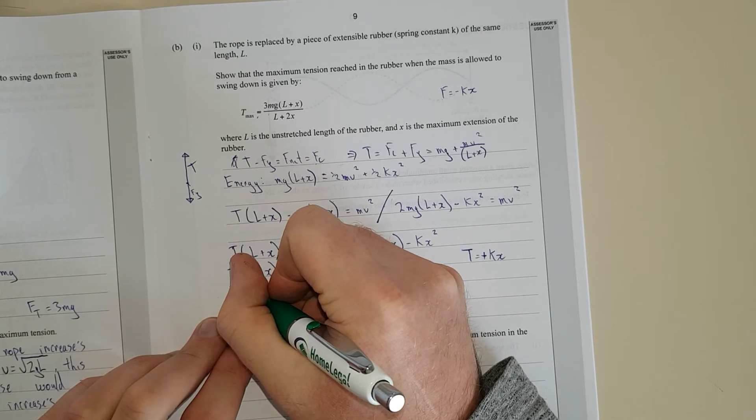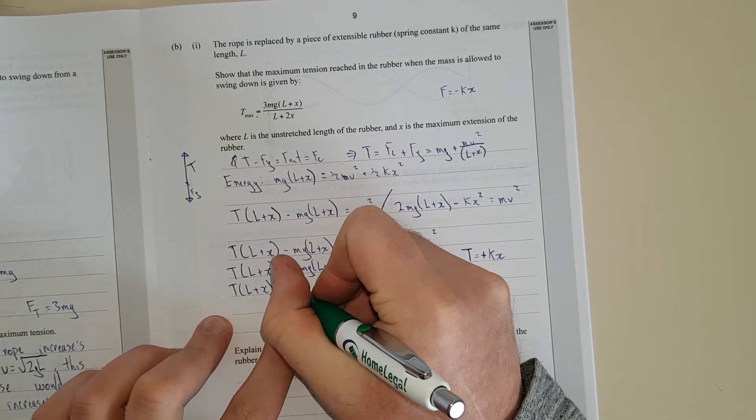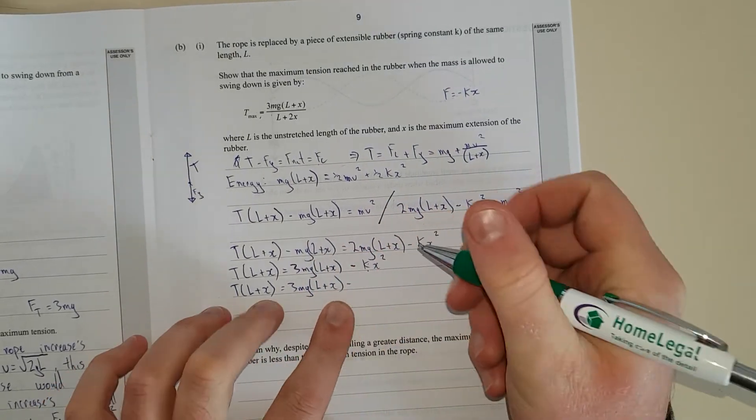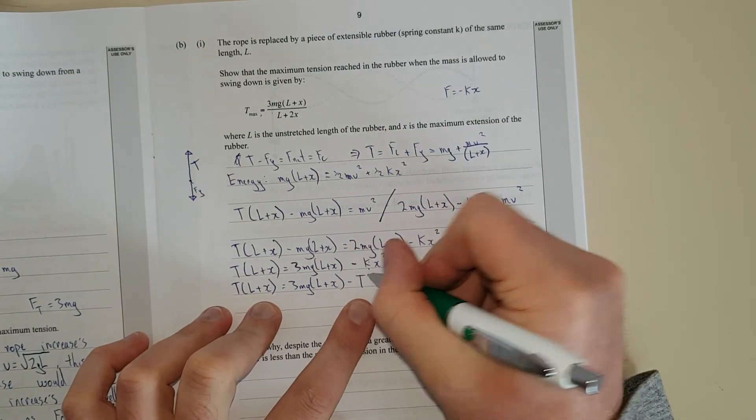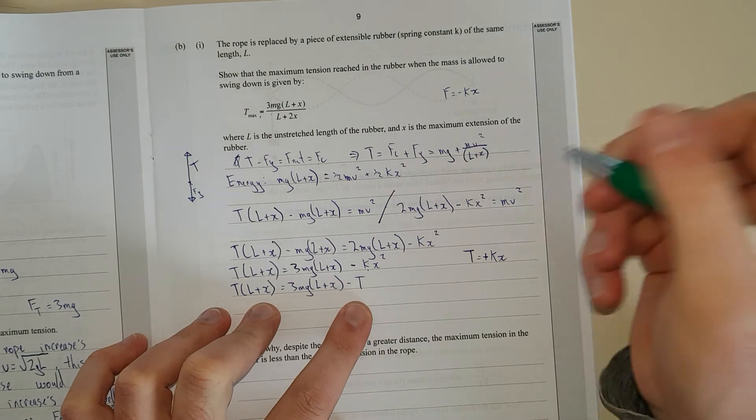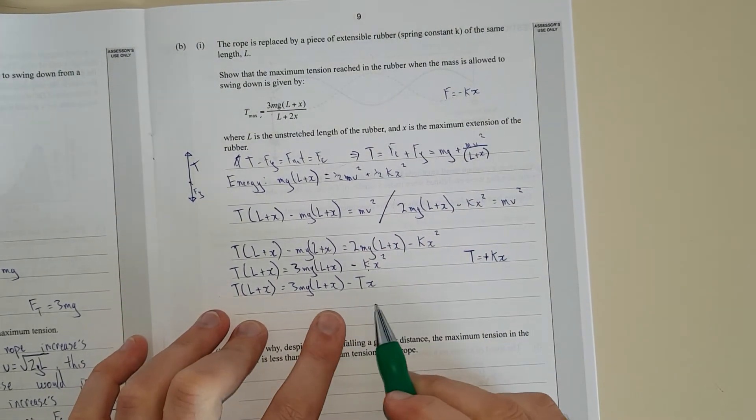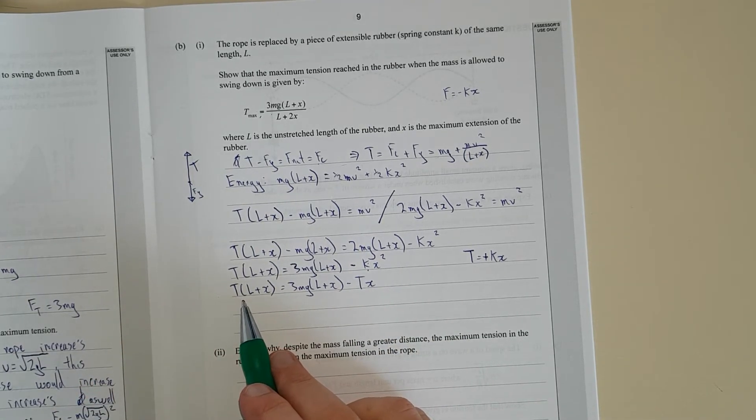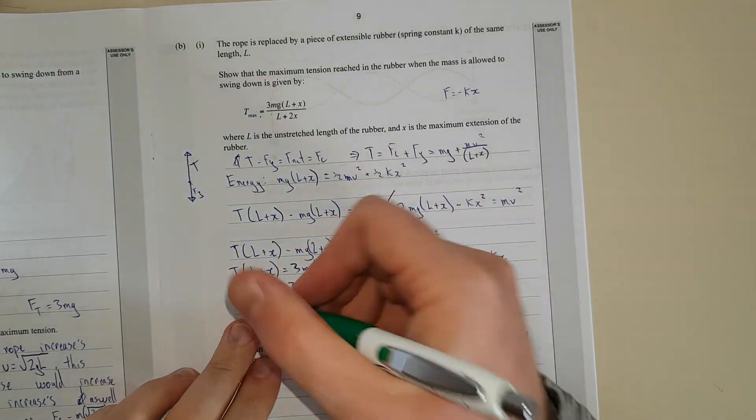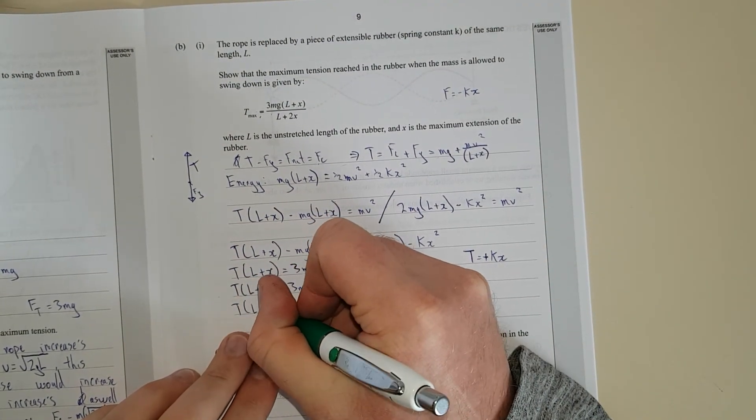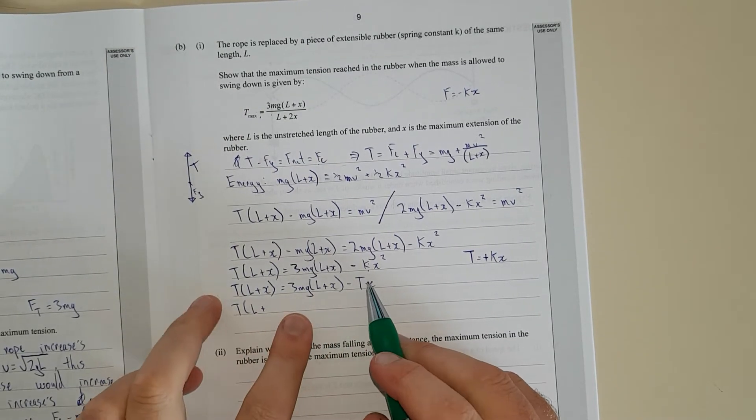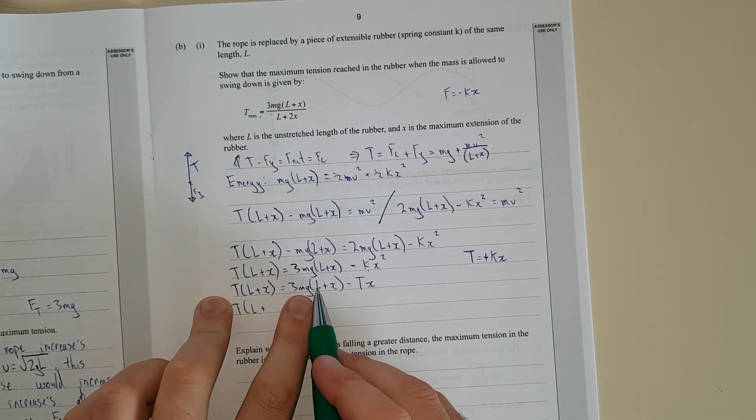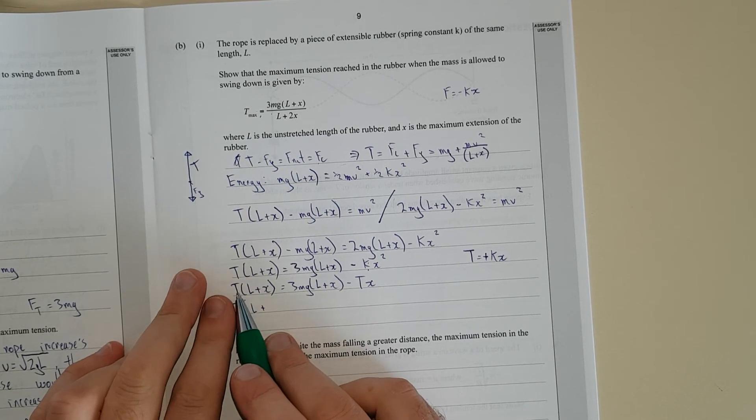So we're going to have T L plus X equal to 3Mg L plus X minus, and now we're going to substitute, this is going to be tension, there's a max tension as well, this is the same tension all the way through, so TX. Now we can see we can shuffle this over to the other side.